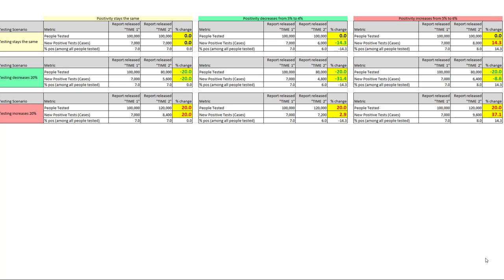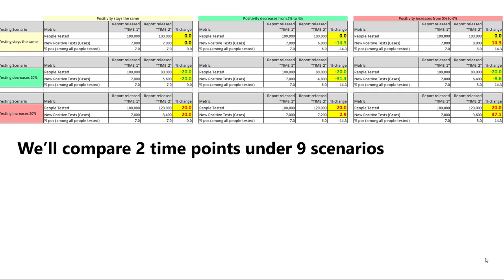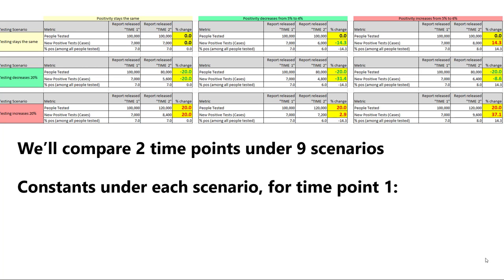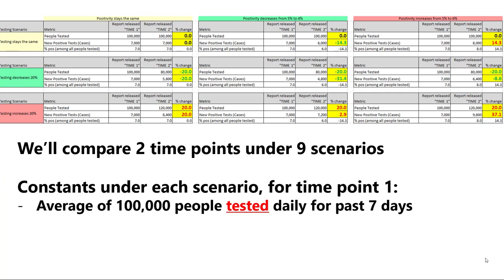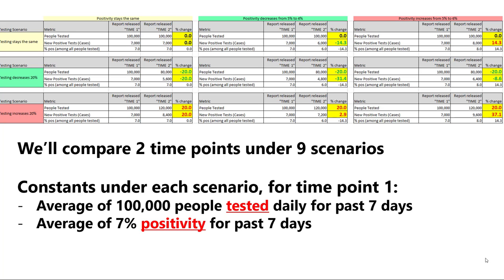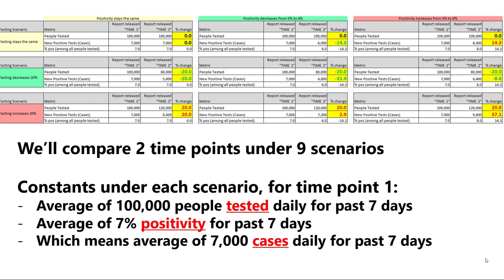I'm going to run through nine different scenarios, comparing two time points — think of this as today versus two weeks ago, or today versus a month ago. All estimates should be based on at least seven-day rolling averages. Under time point one, about 100,000 people are being tested daily over the previous seven days, and the average percent positivity is 7% over those seven days. That means you're having on average about 7,000 cases each day. Then we're going to vary two things: what is happening to testing volume, and what is happening to case positivity.